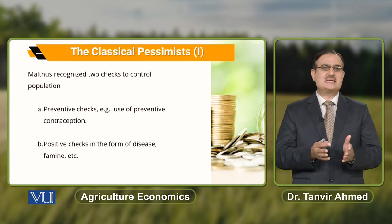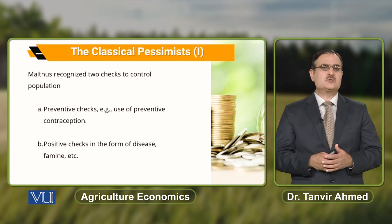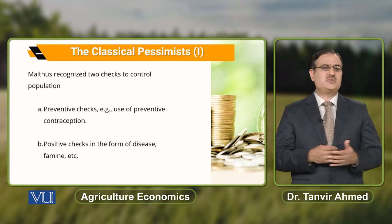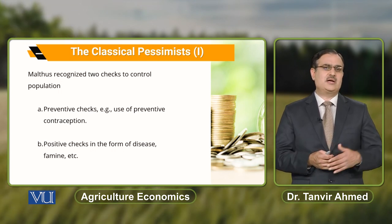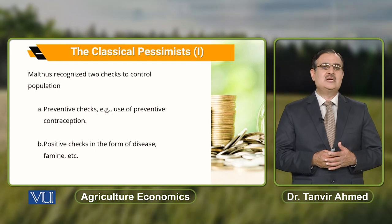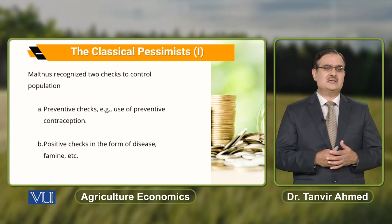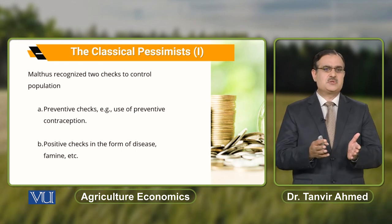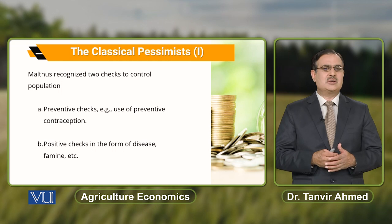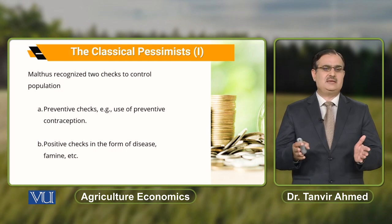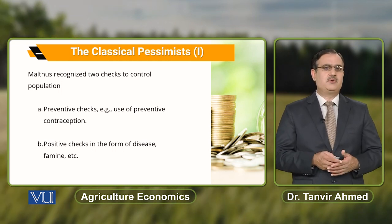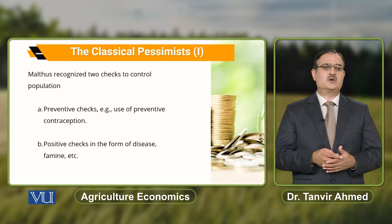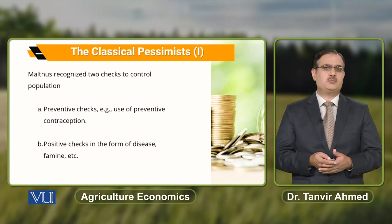Malthus recognized that there might be two types of checks to control population. One he called preventive checks, and the other he called positive checks. Positive checks are in the form of disease and famine. Preventive checks involve the use of contraception methods to control the population.